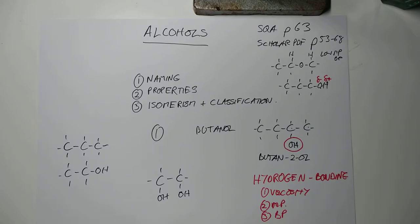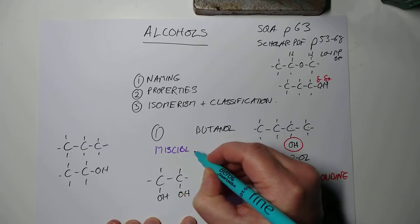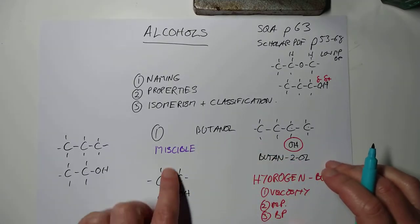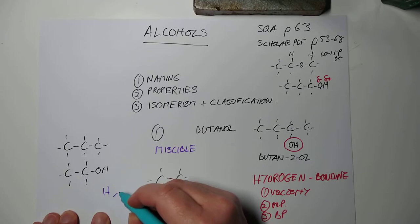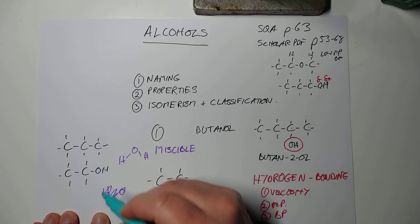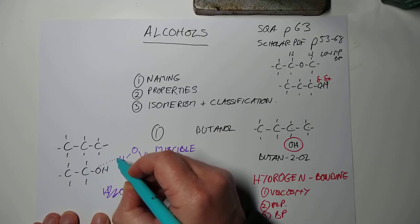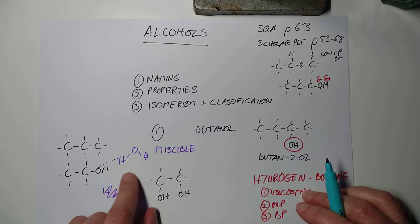One other property is this magic word here called miscibility. Miscibility or miscible. Miscible means it will mix with water. And, of course, alcohol, certainly the smaller ones, definitely will mix with water because you can form hydrogen bonds with the neighbouring water molecule. So, there's the hydrogen bond from the oxygen to the hydrogen, which means that small molecules like ethanol are completely miscible with water. They dissolve in water quite happily.